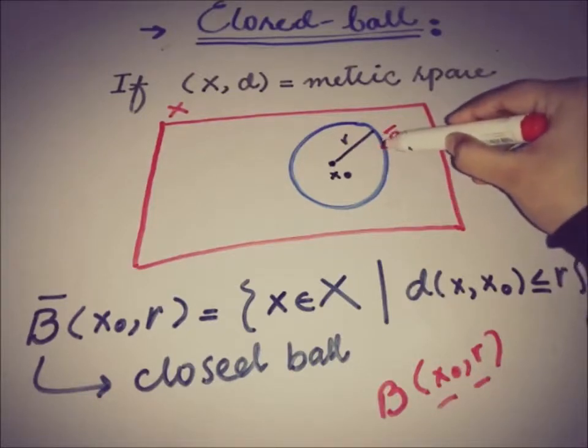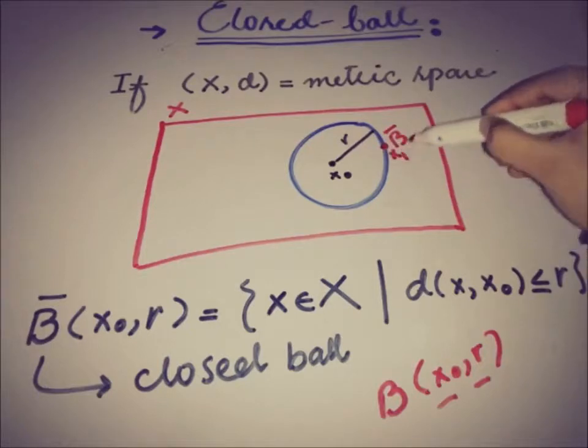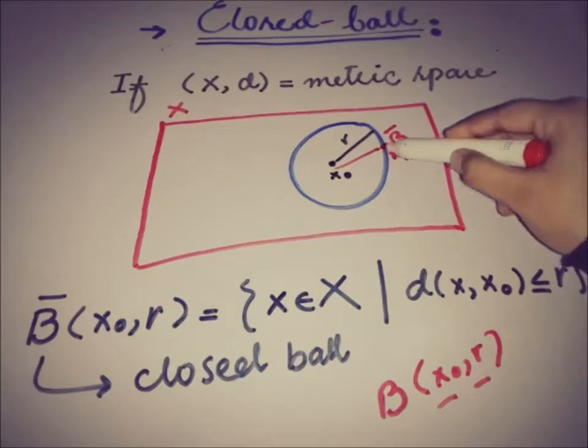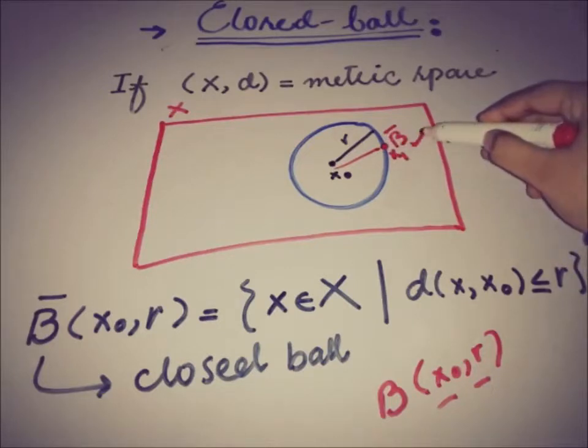And that is, if a point was taken here, let one x₁ here, the distance between x₀ and x₁ is r. So it must be a part of this B bar.